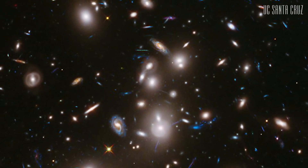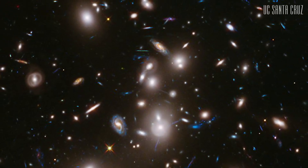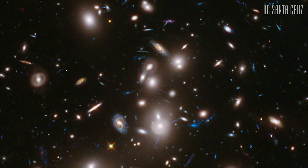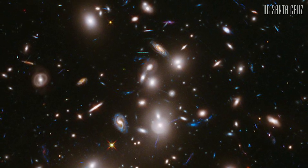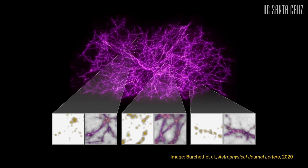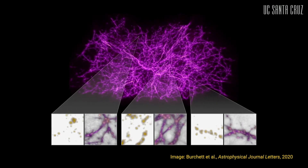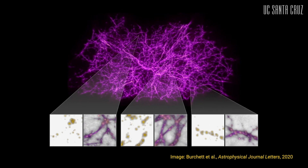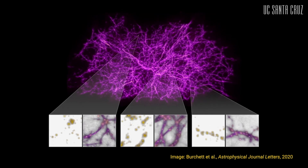For decades now, we've been able to map out galaxies in the universe. Galaxies are organized on the very largest scales into a cosmic web of filaments, walls, and voids.